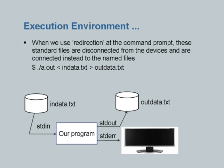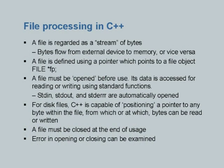Using redirection, you can say read from in_data.txt instead of stdin, and put output to out_data.txt instead of stdout. All of this is done outside the program using cin and cout implicitly. We will now look at the conventional file processing mechanisms available in C++.